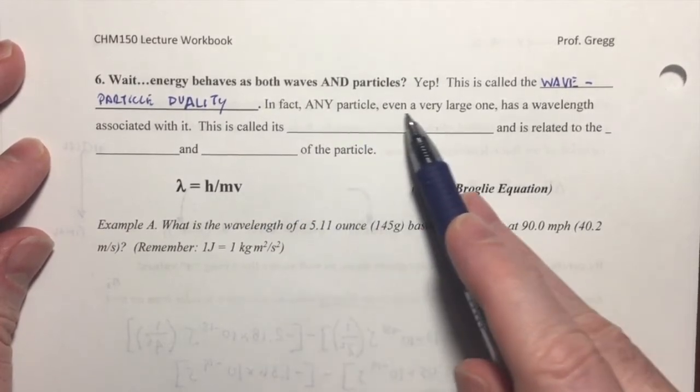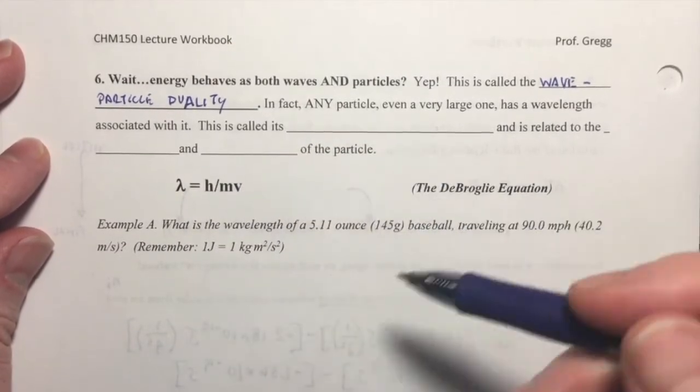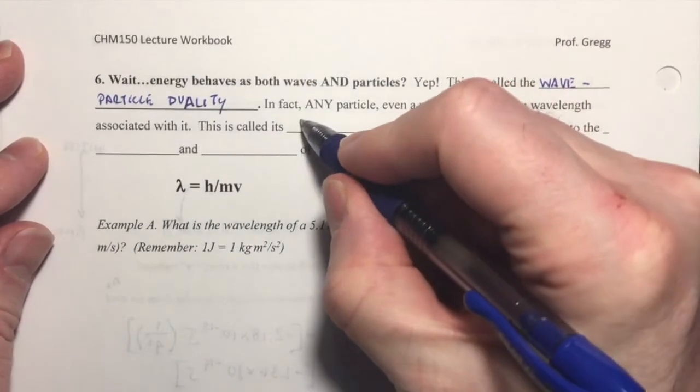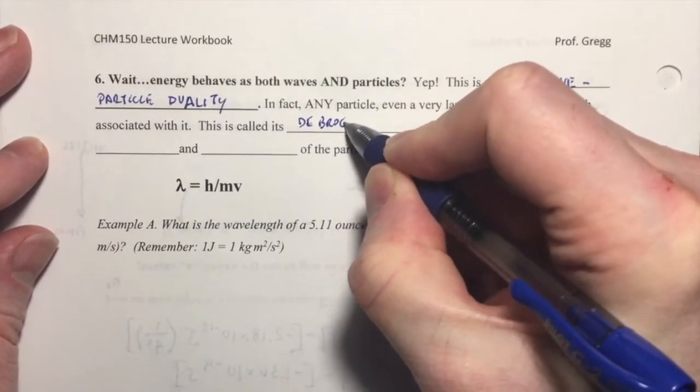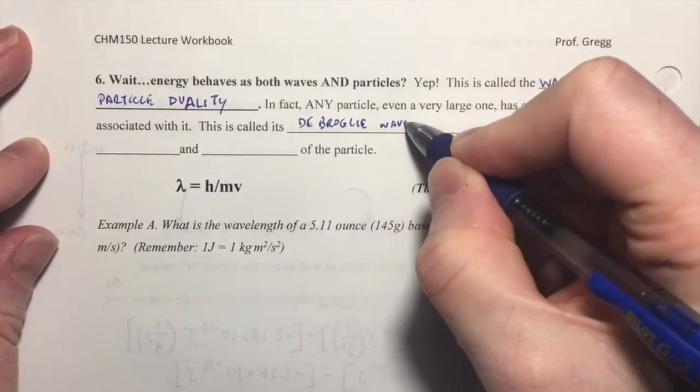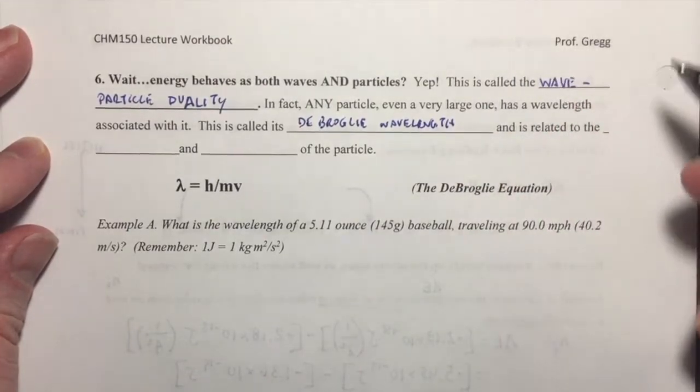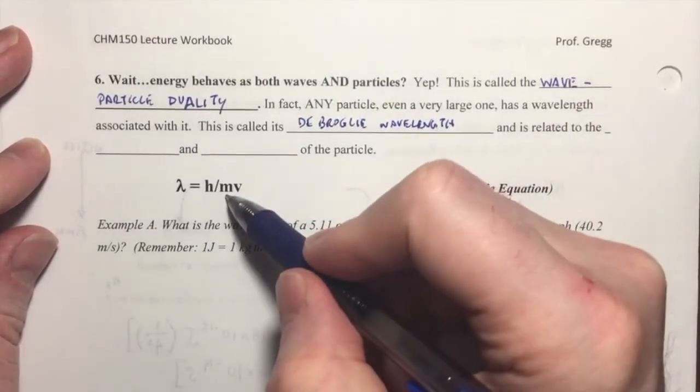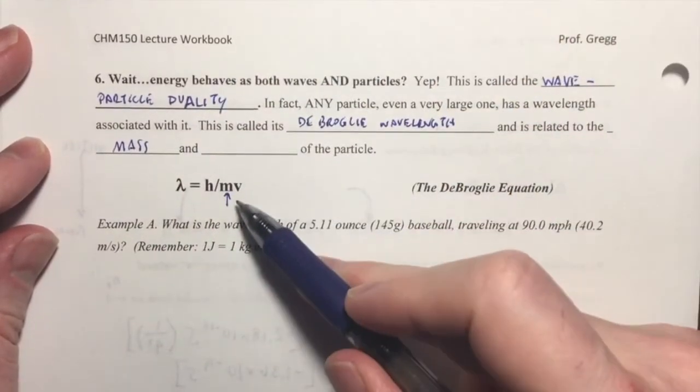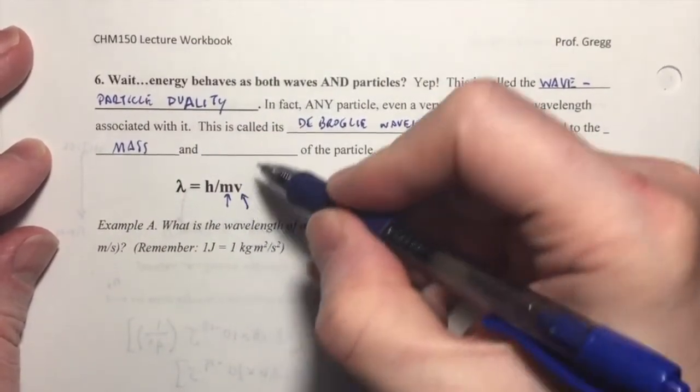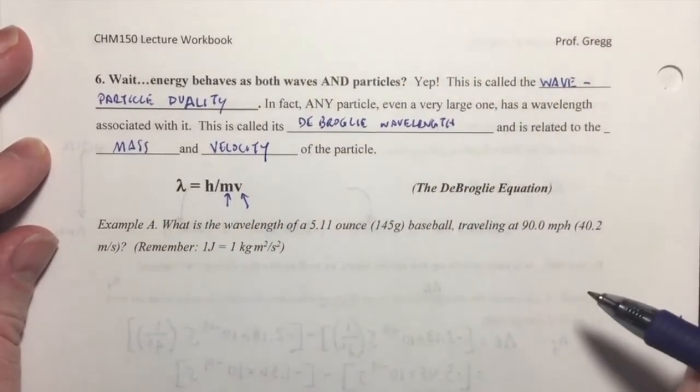Nevertheless, any particle, even a very large one has a wavelength associated with it. And the wavelength associated with a physical particle, it's called its de Broglie wavelength. And it's related to the mass and the velocity of the particle.